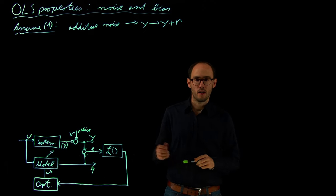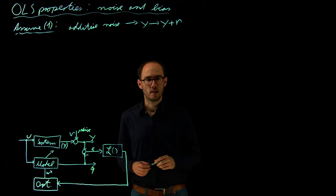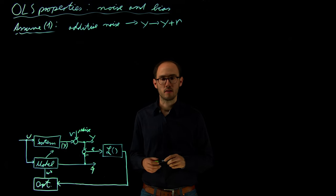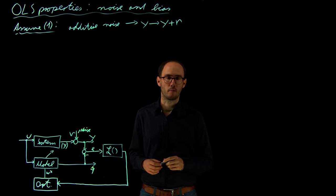Welcome. In the last video we have seen how we can identify the parameters of a car model and we have seen that noise on the output of the measurements could have a significant negative impact on the accuracy of the identified parameters.